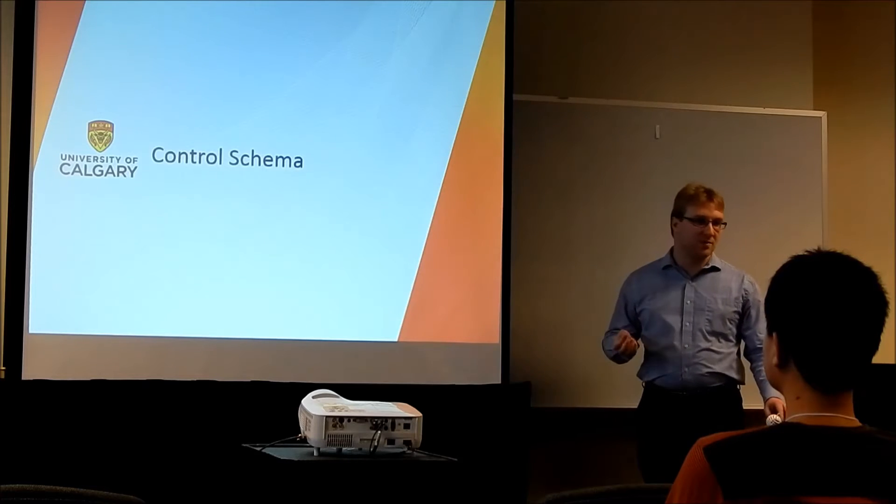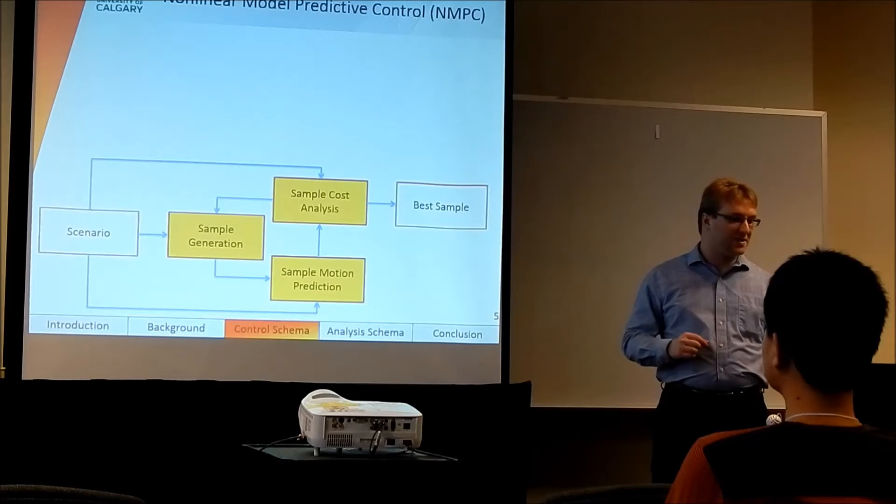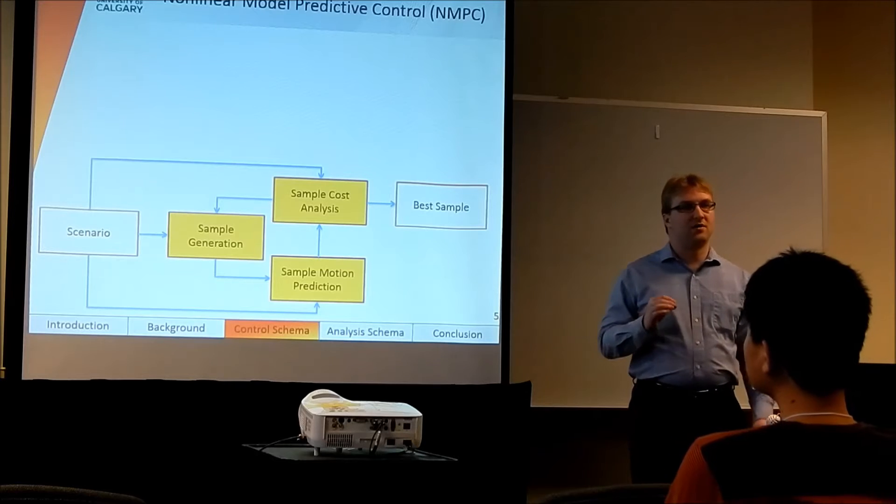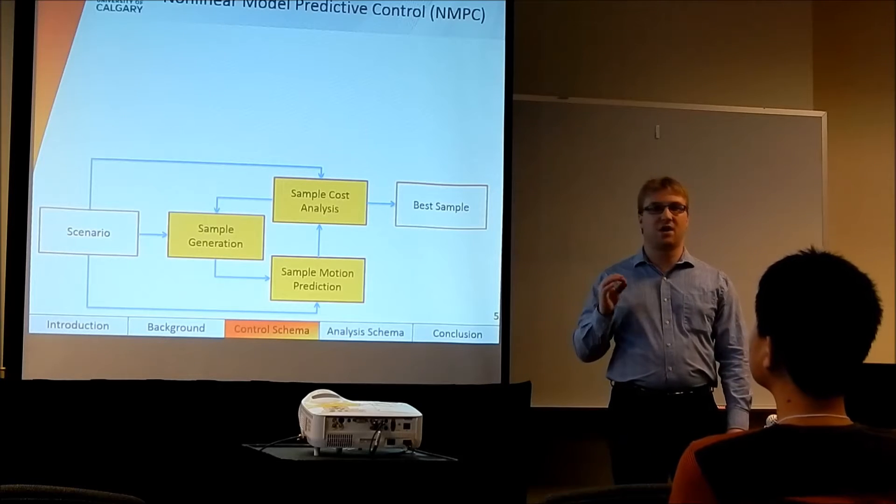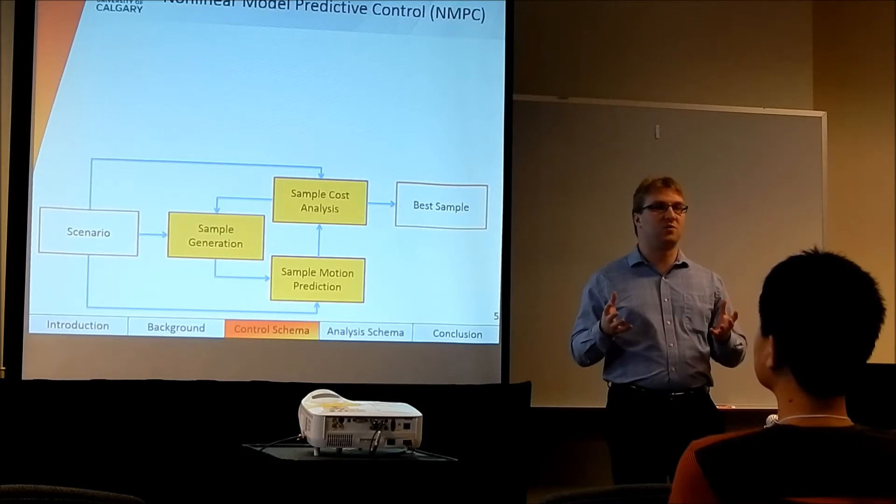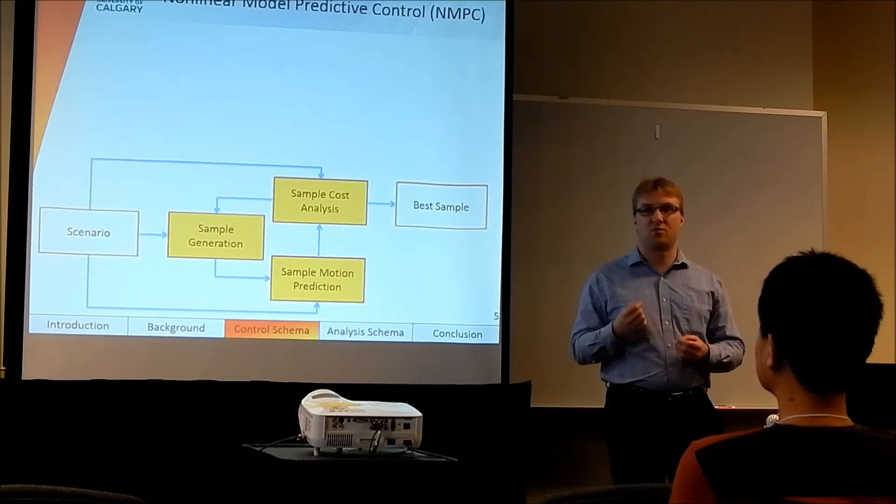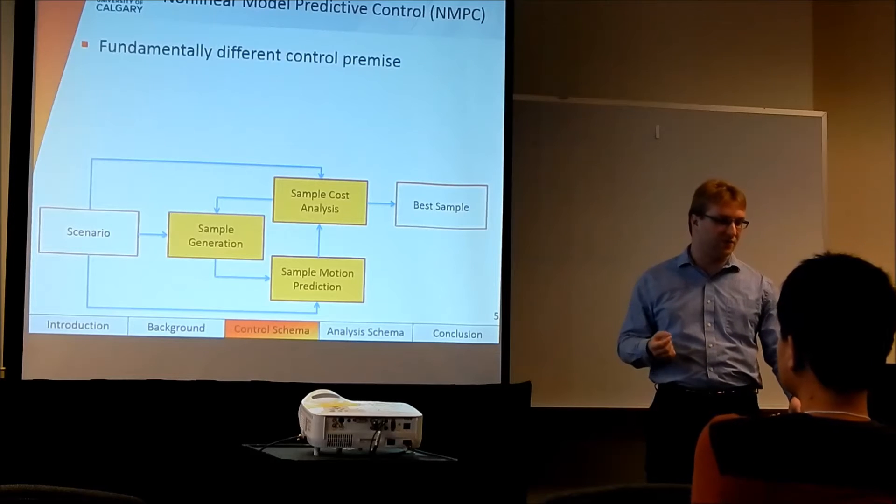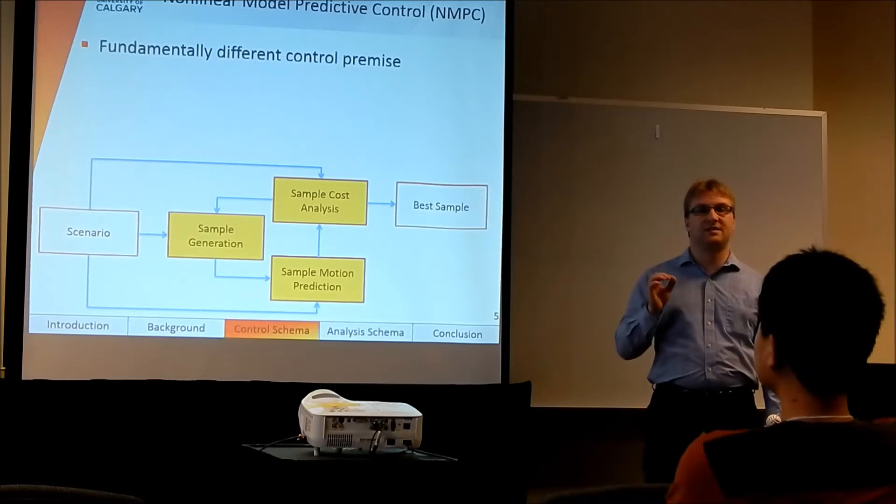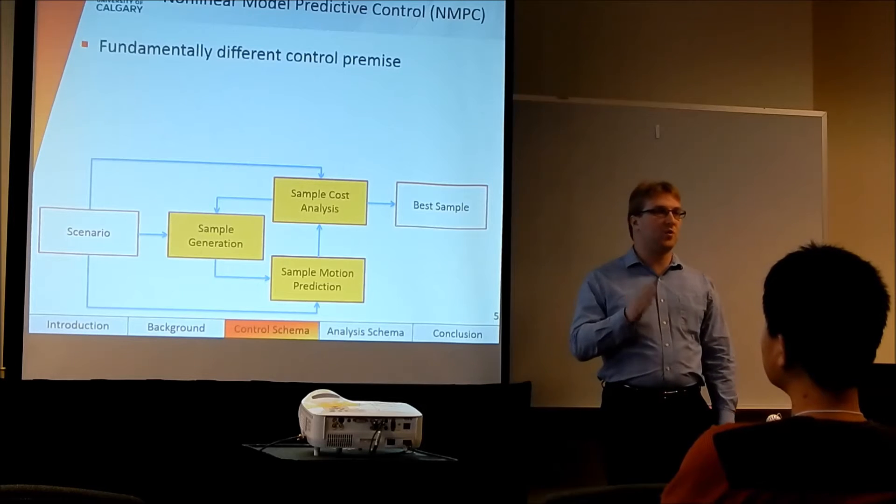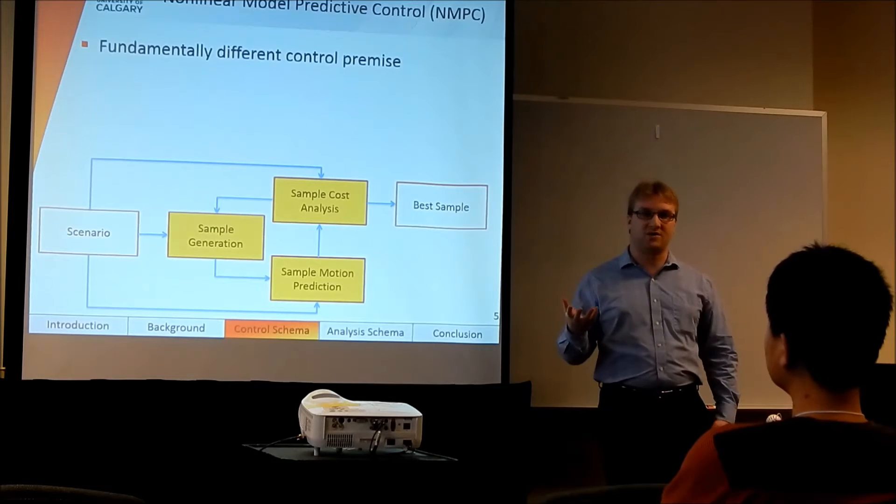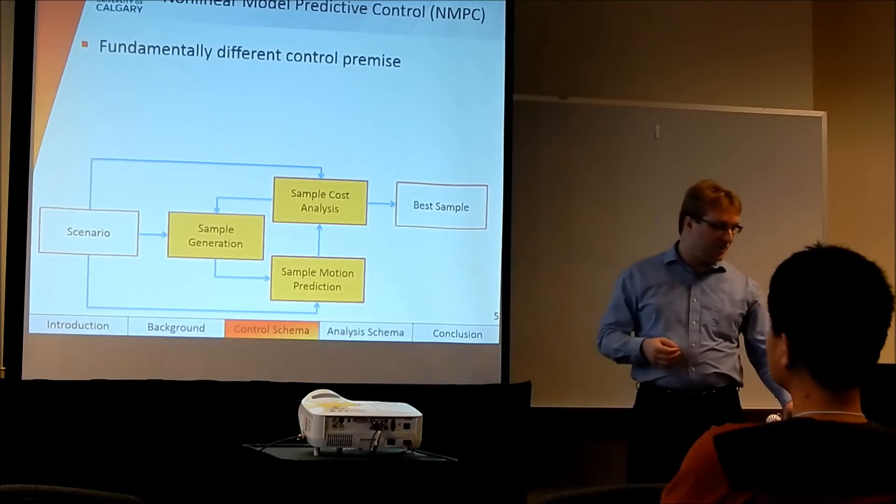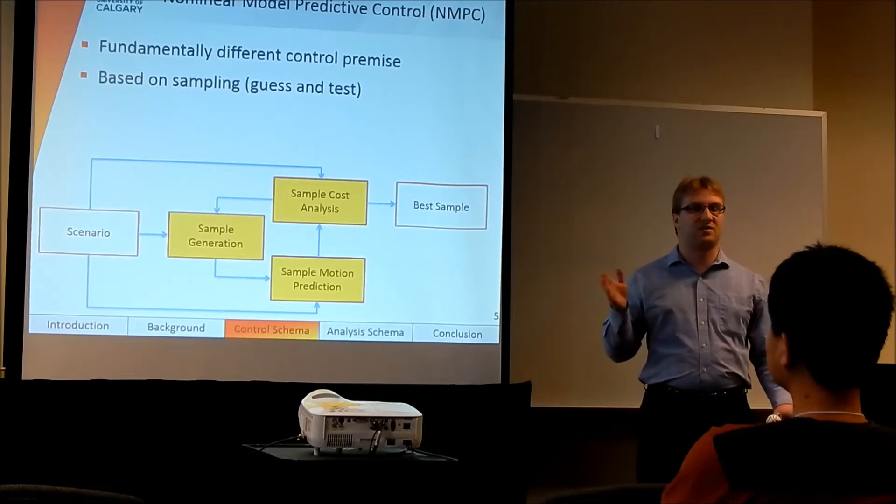Here we're bringing in a new control schema, specifically nonlinear model predictive control. Now, this control schema has been used in other areas. The most notable area would be process engineering, but it's never really been applied to unmanned aerial vehicles quite to the degree that we need for vehicles like our TV quad to fly. So what is nonlinear model predictive control? Well, it's a fundamentally different control premise. Instead of computing what the control output should be based on the current state, we do a guess and test method, and we use sampling to figure out what's the best control option.